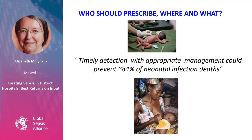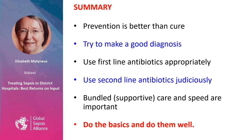Another problem when we want to treat quickly is not just timely detection but timely action. We need to think carefully in each of our hospitals about who should prescribe what and where, because the earlier that antibiotic gets in, the better the prognosis. In summary: prevention is much better than cure. We should try to make a good diagnosis, then use first-line antibiotics appropriately and second-line antibiotics judiciously. Remember that bundled care and speed are important — do the basics and do them well.